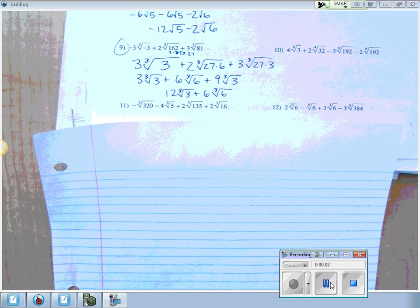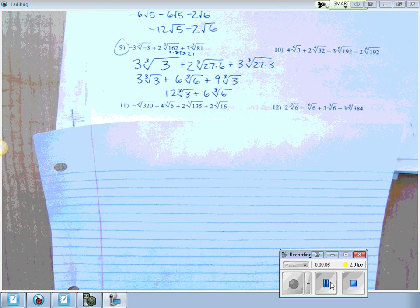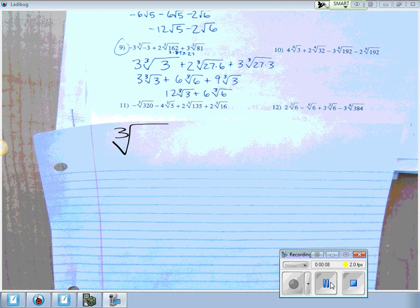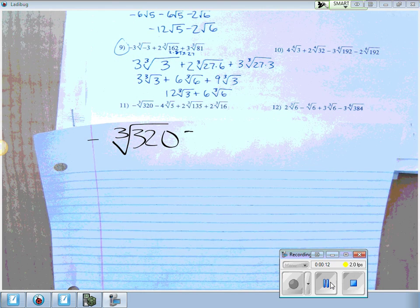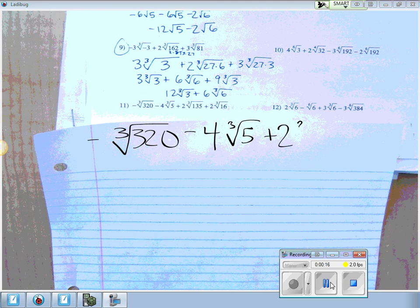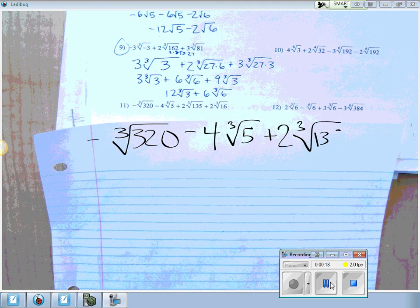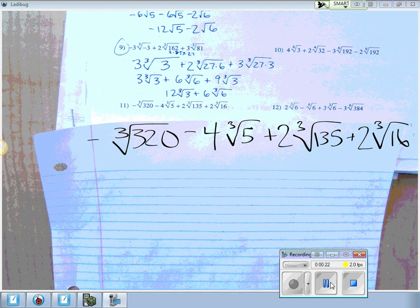Okay, it's number 11 here, second to last page in this white radical review packet. They want you to take the cube root of 320, which by the way is negative, and they want you to subtract 4 cube roots of 5, it's a weird problem, plus 2 cube roots of 135, plus 2 cube root 16.